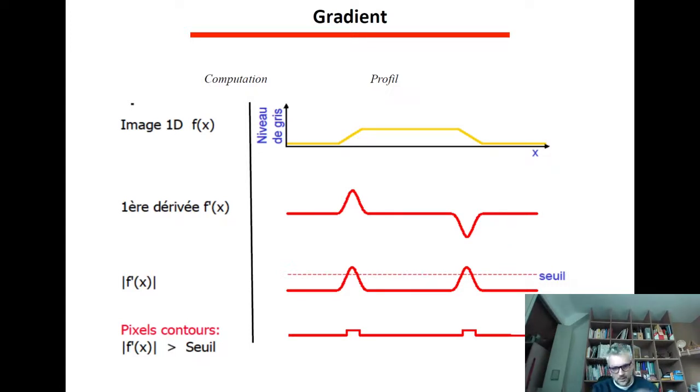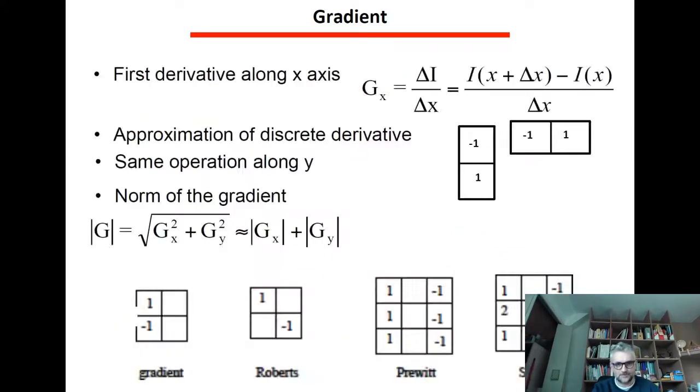So if we take the absolute value of this first derivative we're going to have bumps, blobs that appear when we have a rapid variation of gray level. So we can for instance threshold this first derivative of the image and we will have ones where we have the borders and zeros everywhere else.